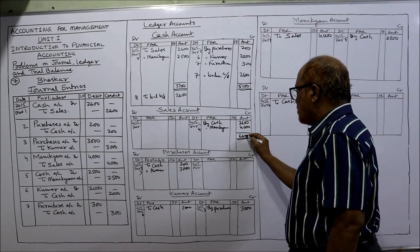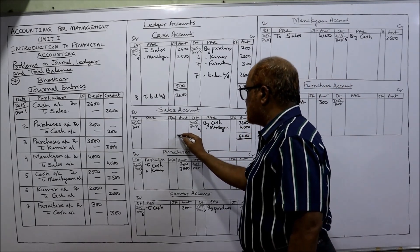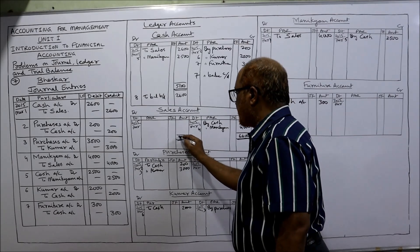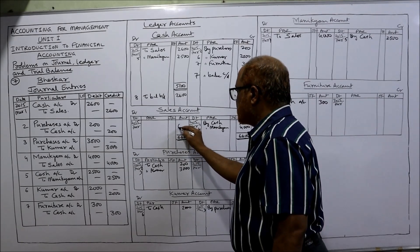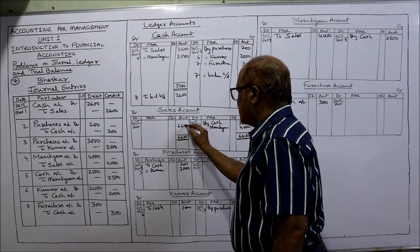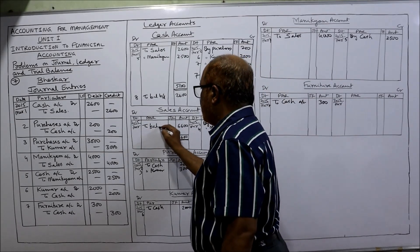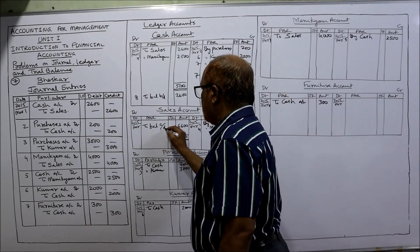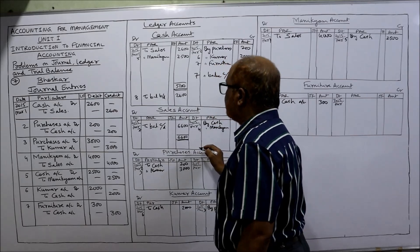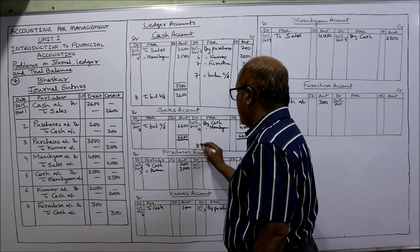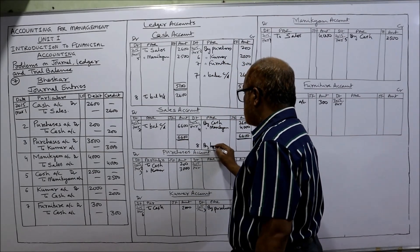Balancing the sales account: total is 6600. Take 6600 on the debit side as 'By balance carried down', date 7th. Next date 8th: 'To balance brought down — 6600.' Sales account balanced.